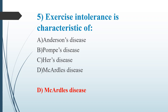McArdle's disease occurs due to deficiency of the enzyme muscle glycogen phosphorylase. Other options: Anderson's disease is glycogen storage disease type 4, caused by inborn errors of metabolism. Pompe's disease is glycogen storage disease type 2. Hers' disease is glycogen storage disease type 6, also an inherited disorder.